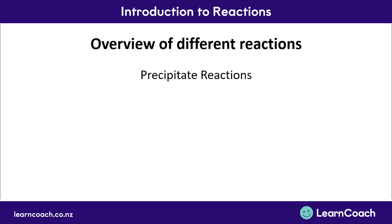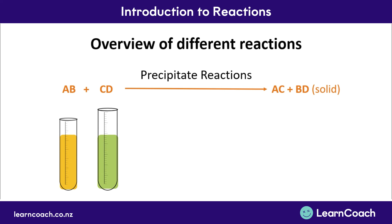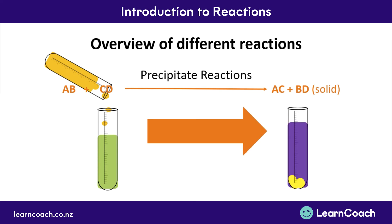The last reaction type is precipitate reactions, which are a little more tricky. You have two compounds in solution that, when they come together, exchange ions to form two new compounds — one of which will remain in solution as a liquid, and the other that becomes insoluble and forms as a solid precipitate. So two compounds in solution are added together, forming two new compounds: one that stays a liquid, and one that forms as a solid precipitate because the compound formed is insoluble.